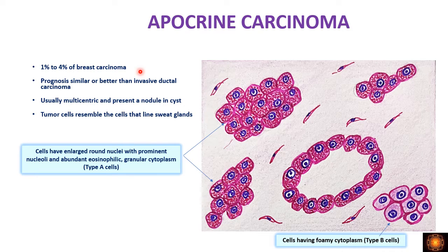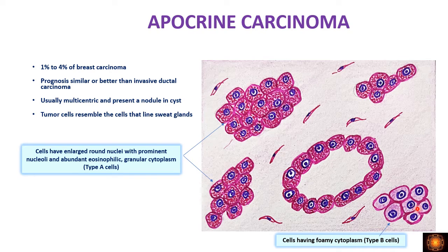Apocrine carcinoma comprises 1–4% of breast carcinomas and has better prognosis than invasive ductal carcinoma. As the name suggests, apocrine cells have abundant eosinophilic granular cytoplasm. Cells are arranged as sheets or in a glandular pattern. There are two cell types: type A cells with abundant eosinophilic granular cytoplasm, and type B cells with foamy cytoplasm. Both can be present in apocrine carcinoma. It is also multicentric and can present as a nodule in a cyst.